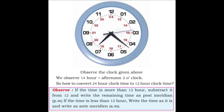If the time is less than 12 hours, write the time as it is and write it as anti meridian (AM). To convert 24-hour clock time to 12-hour clock time, subtract 12 from the given time.